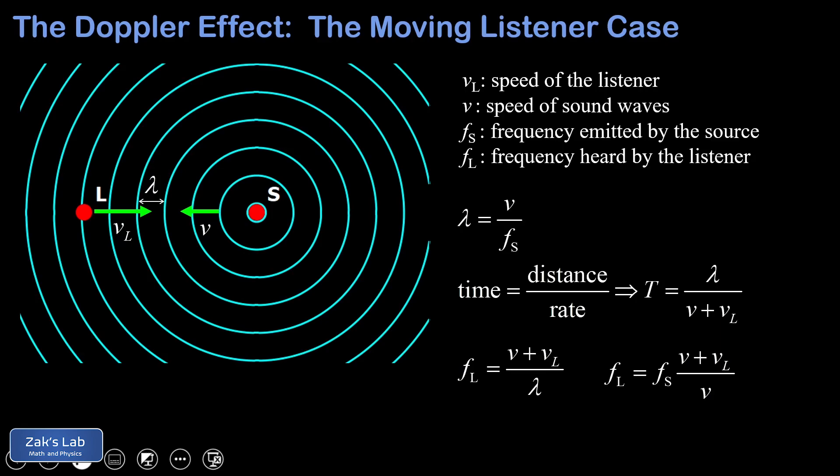This equation needs to be generalized to the case where the listener moves away from the sound waves. In that case, the relative velocity is V minus VL. So we put a plus or minus in the equation to generalize it. We choose plus when we expect the frequency to be higher — that's when going toward the source — and minus when we expect the frequency to be lower — that's going away from the source.